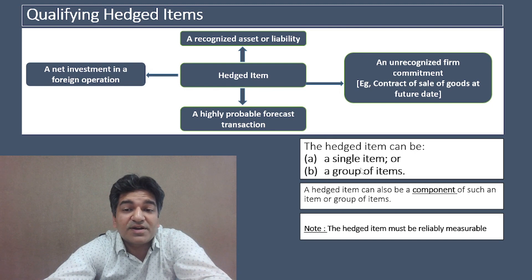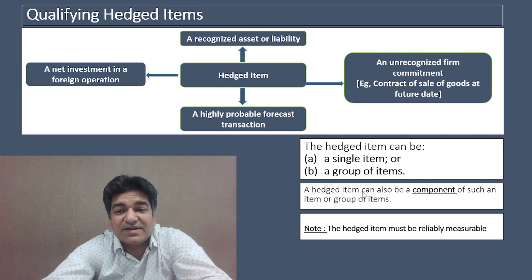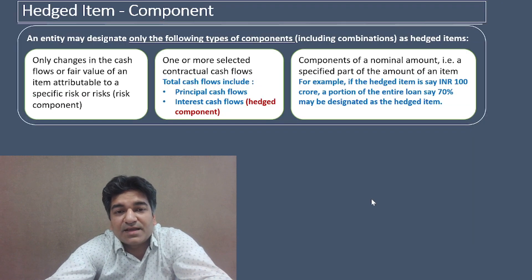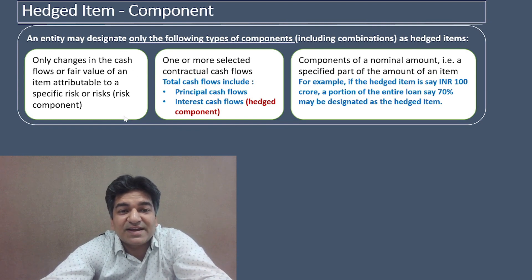Ind AS 109 also says that a hedged item can be a single item or a group of items. It also says that a hedged item can be a component of such items or a group of items. Ind AS 109 has given a list of the components that can be designated as hedged items — there are three such components.